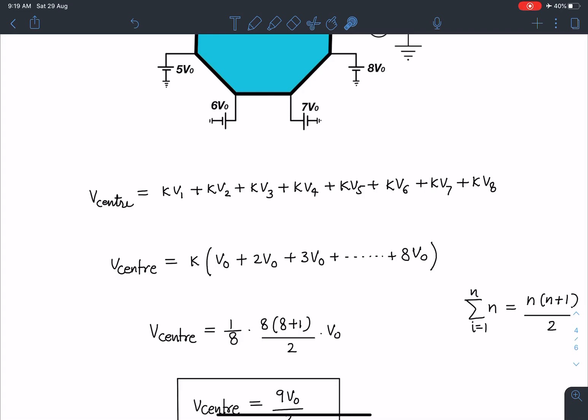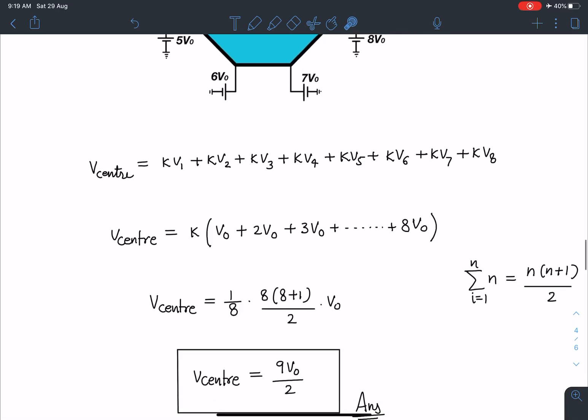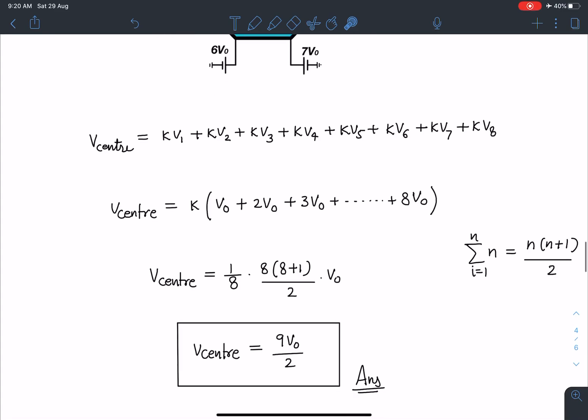So I can write K which is 1 by 8 in this situation and this will become n(n+1) by 2. Number of terms are 8 here, so 8 into 8 plus 1 by 2. When I simplify this I am going to get 9 by 2 V0. This is the answer for this particular problem and I am using this result that sigma n equals n(n+1) by 2. So I hope you have enjoyed this solution.